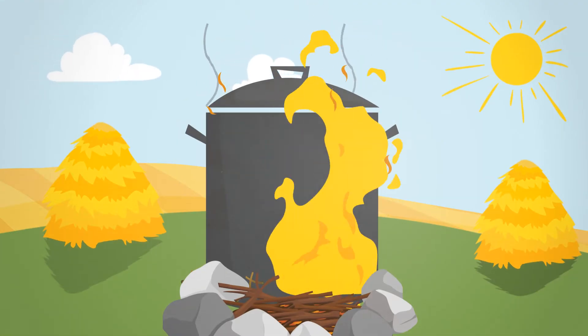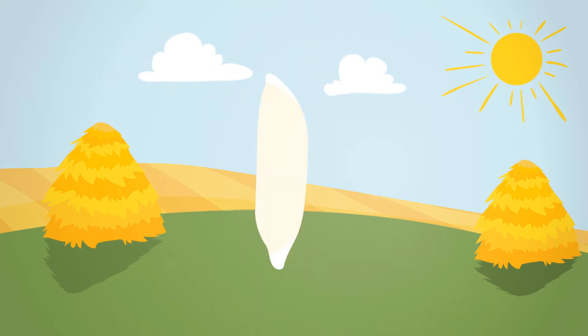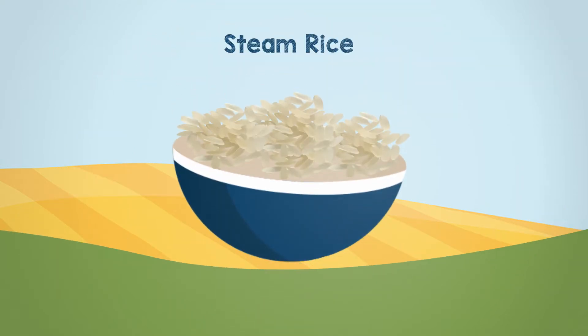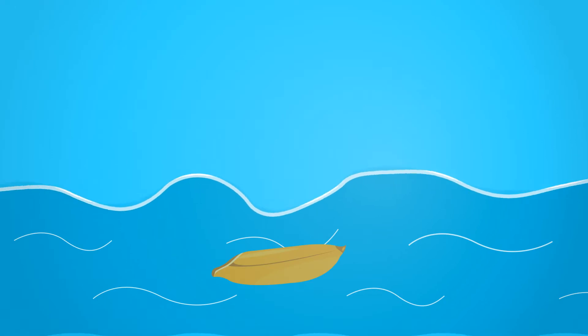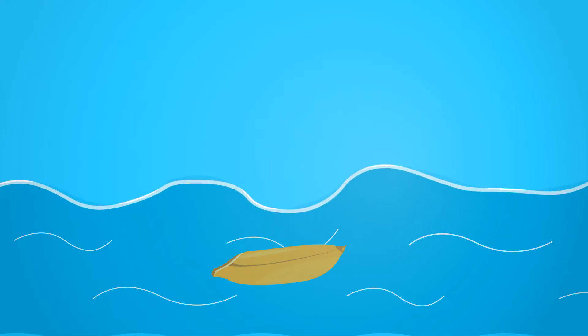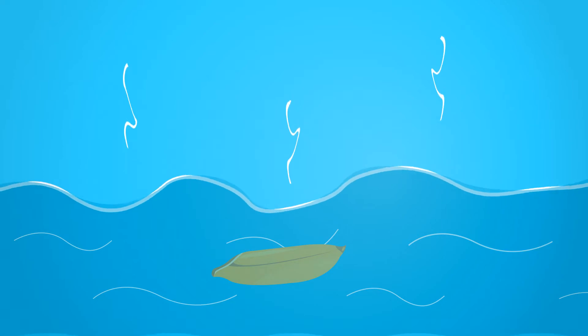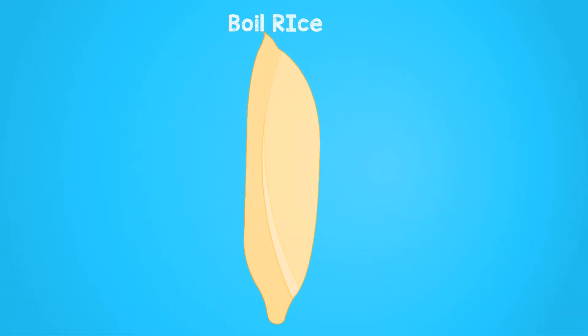To make the steamed rice, paddy is steamed for a short time and dried before removing husk and bran. The paddy is soaked in water for a few hours followed by boiling it in water for a few minutes before removal of husk and bran to produce boiled rice.